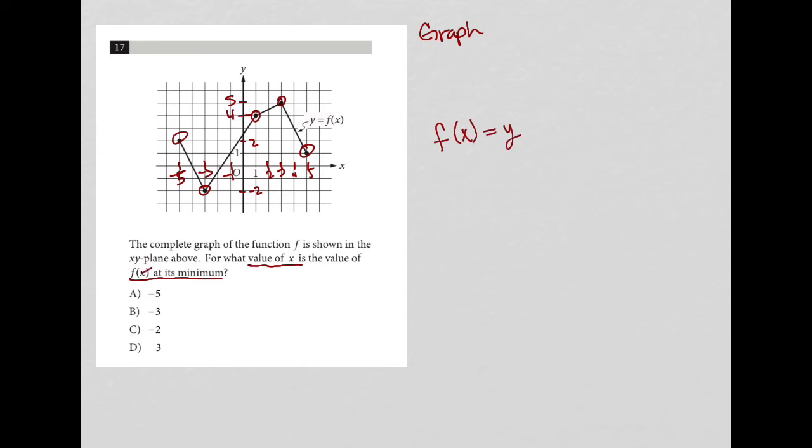What I like to do sometimes is just cross out F of X, especially when it's graph related, cross out F of X, replace it with Y. And then when I read it for what value of X is the value of Y at its minimum.